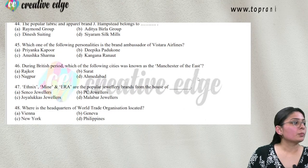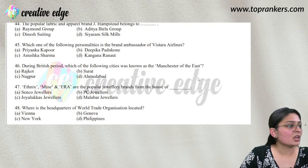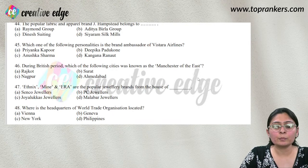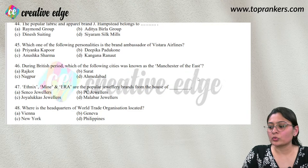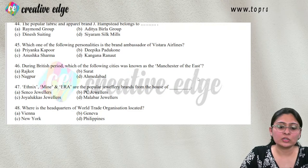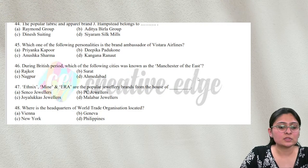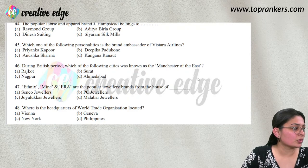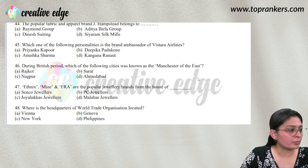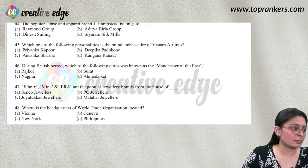Question 44: The apparel brand J. Hampstead belongs to Siyaram Silk Mills — option D. The brand ambassador of Vistara Airlines is Deepika Padukone.